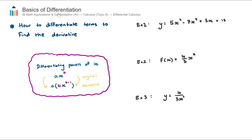In this video we look at the basics of differentiation. We're in Topic 5, Calculus, in the AI course, under the subtopic of differential calculus. In Topic 5 Calculus there are two main subtopics: differential calculus and integral calculus. This is the second video in a four-part series on differential calculus. In the first video we looked at what differential calculus actually means — we had a quadratic curve and sketched tangents at particular points. Those tangents gave us the slope of the curve, and that's what differential calculus is about: finding the slope of a curve at any point.